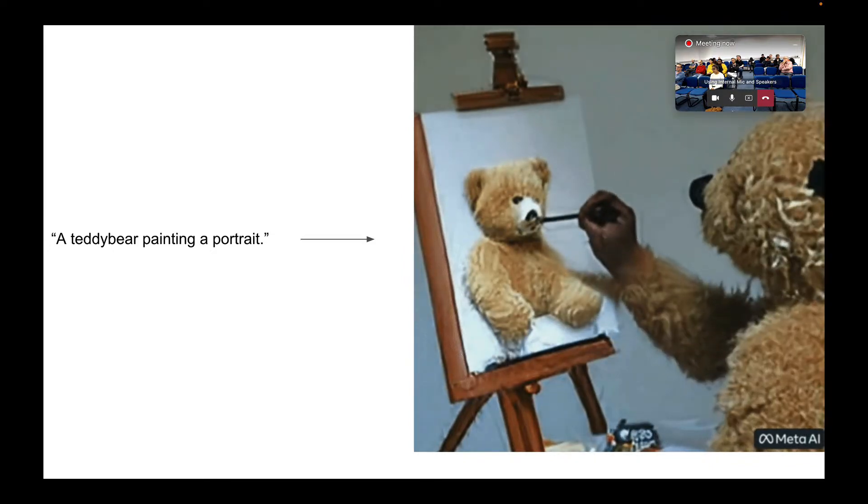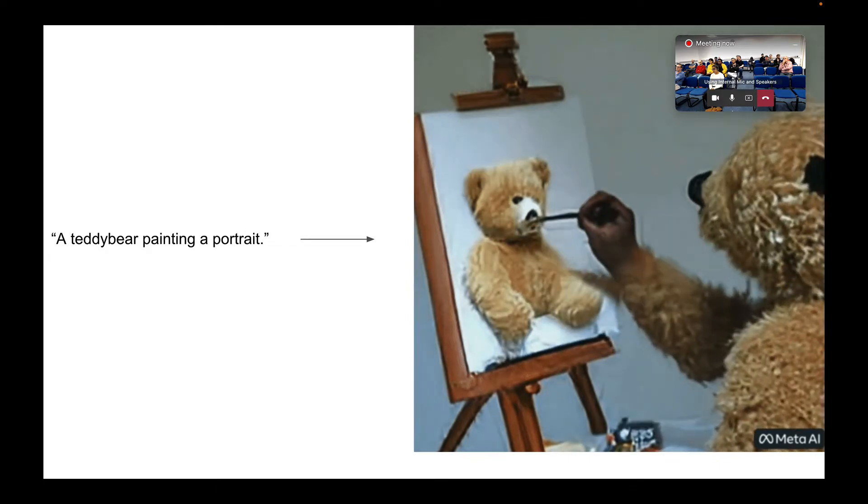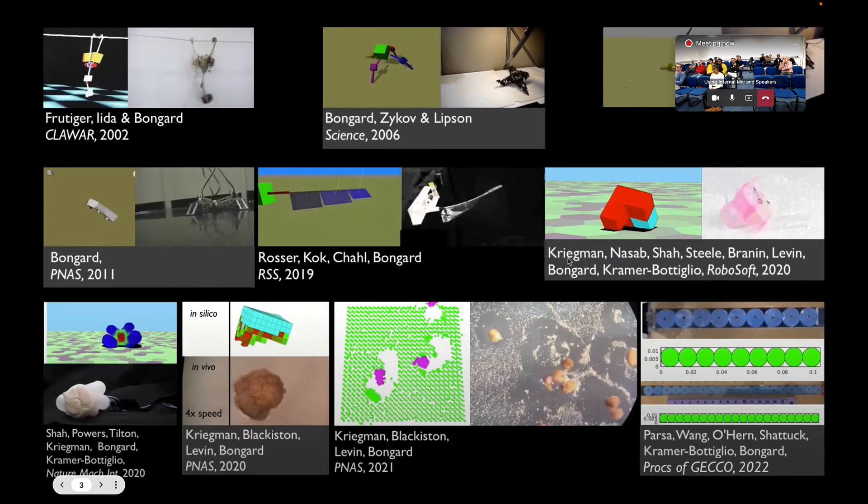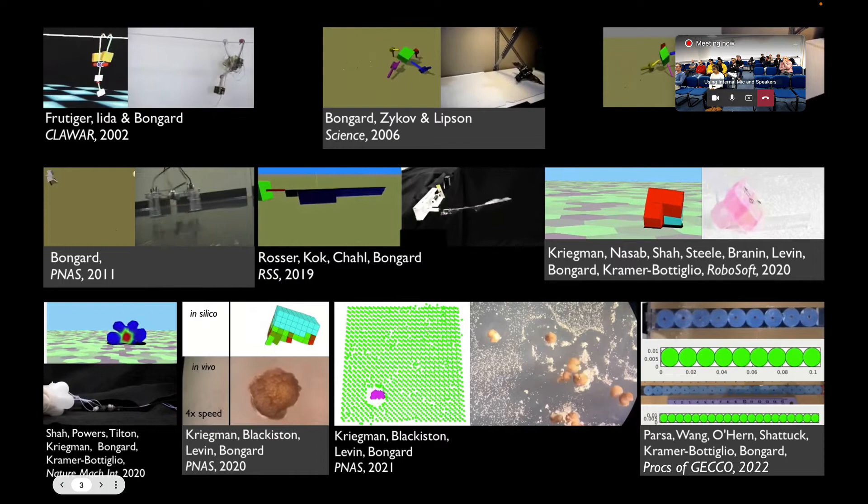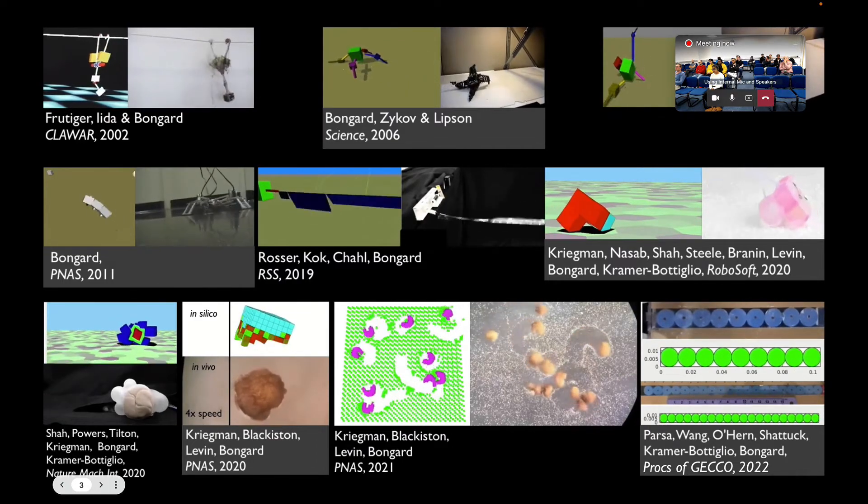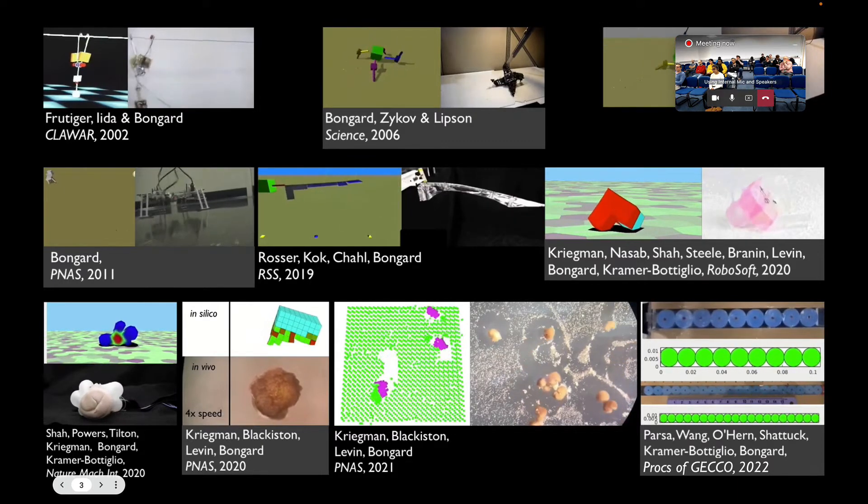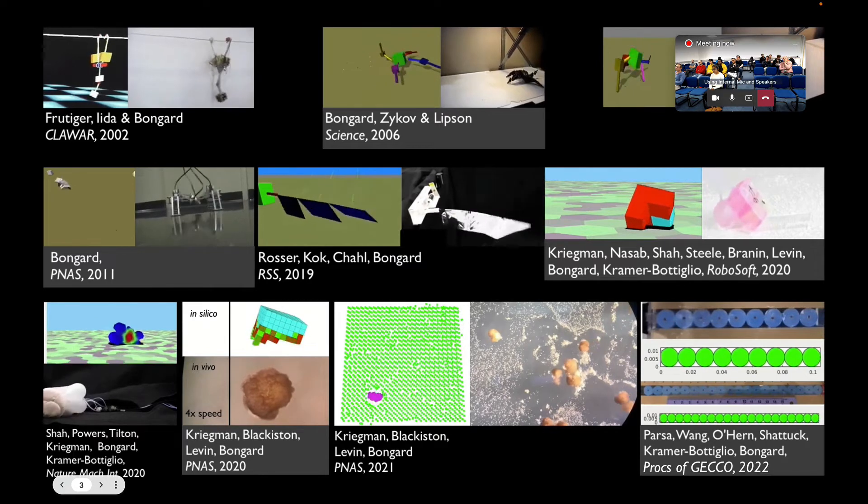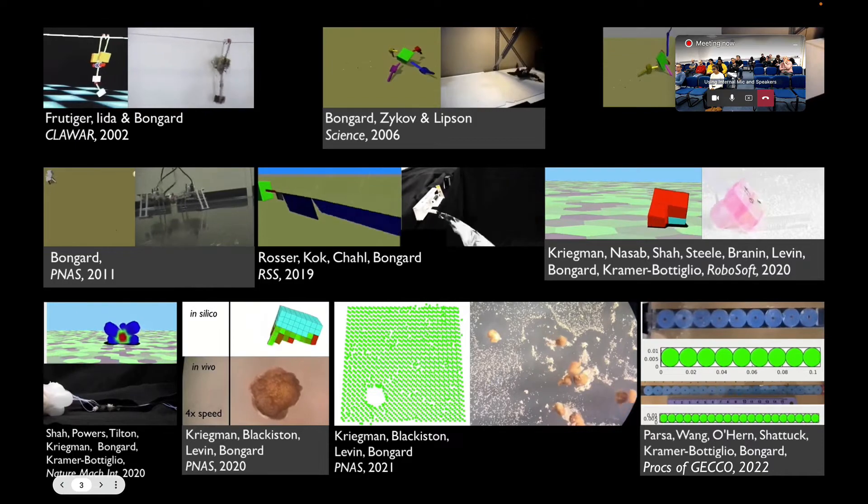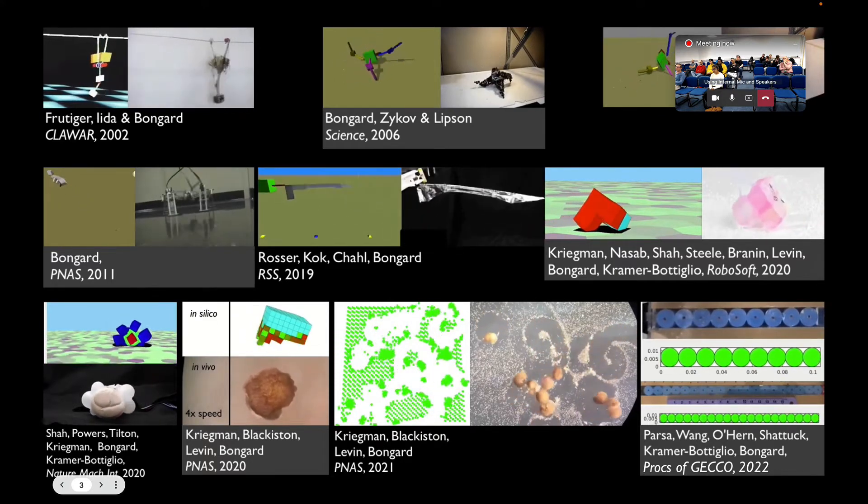Seemingly crazy ideas often end up panning out. So I would encourage you to be courageous in your choice of research questions. Just because you're not working in the mainstream of AI and robotics, that's possibly a good thing. We are, of course, seemingly in the middle of an AI high summer. It seems like every week, there's some breathtaking advance in non-embodied AI, sometimes in robotics, but mostly non-embodied AI.